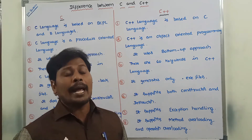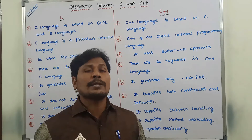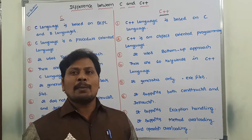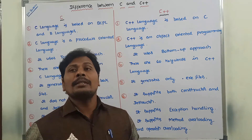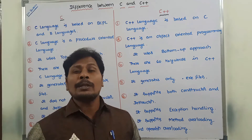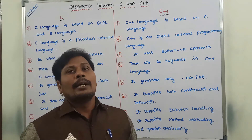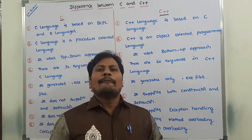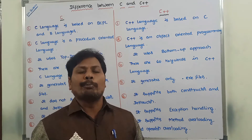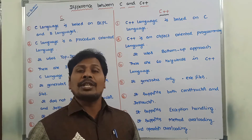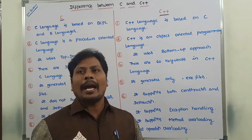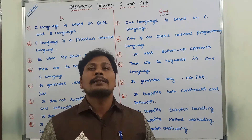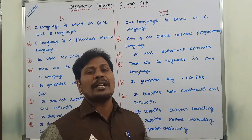C language does not support exception handling mechanism, whereas C++ language supports exception handling by using try and catch keywords. An exception is like an error. To handle such errors, C++ uses the concept called exception handling. For example: array index out of bounds exception, division by zero exception — these are some examples of exceptions.